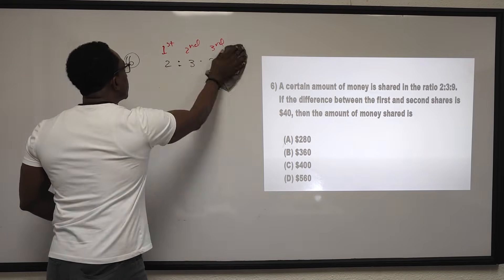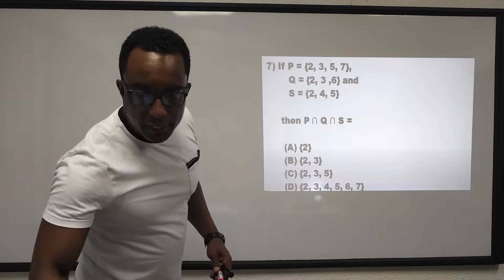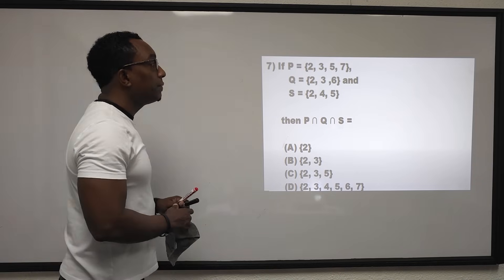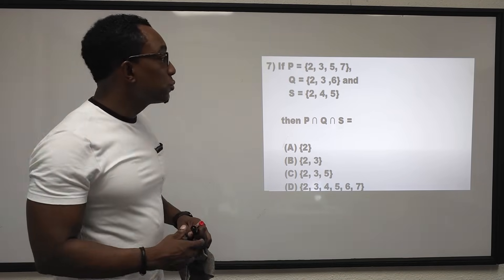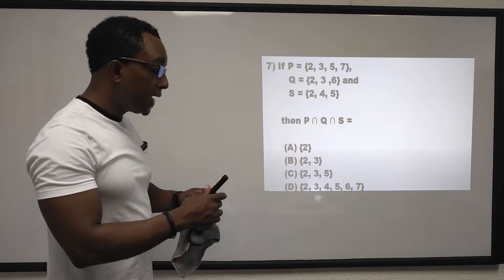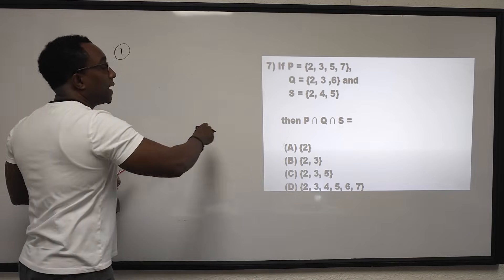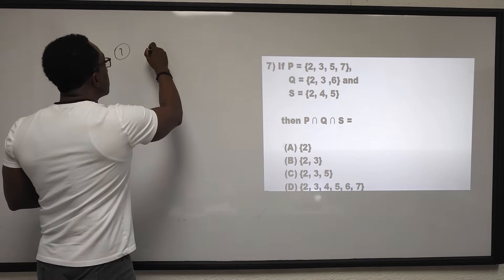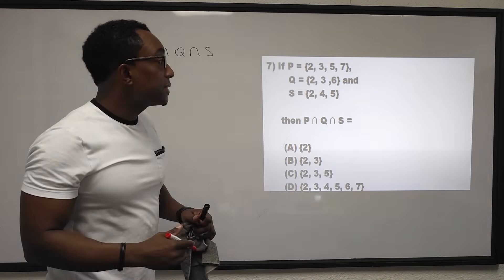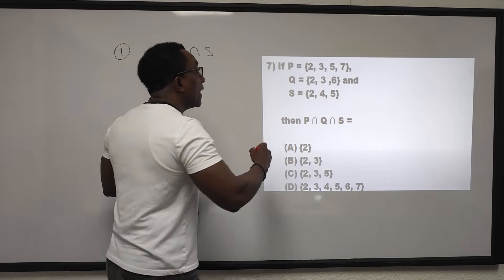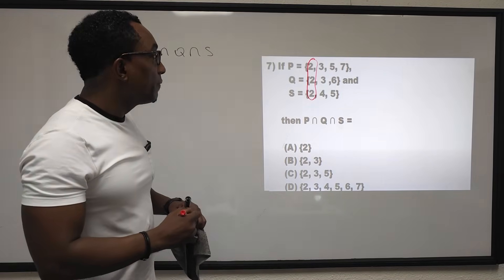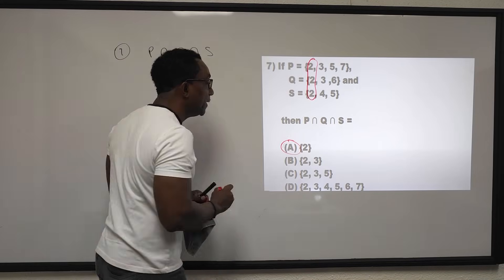Question 7: if P equals {2, 3, 5}, Q equals {2, 3, 6}, S equals {2, 4, 5}, then what is P intersect Q intersect S? Intersection means elements common to all three sets. The only element common to all three is 2. The answer for question 7 is A.